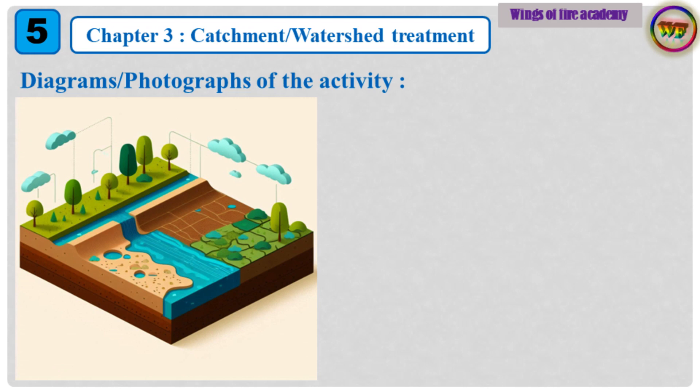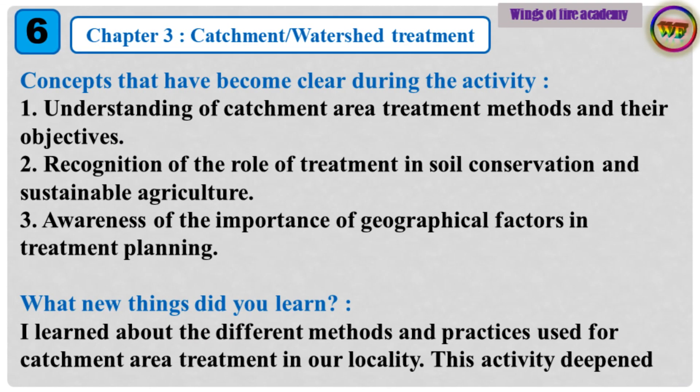Concepts that have become clear during the activity: 1. Understanding of catchment area treatment methods and their objectives. 2. Recognition of the role of treatment in soil conservation and sustainable agriculture. 3. Awareness of the importance of geographical factors in treatment planning.